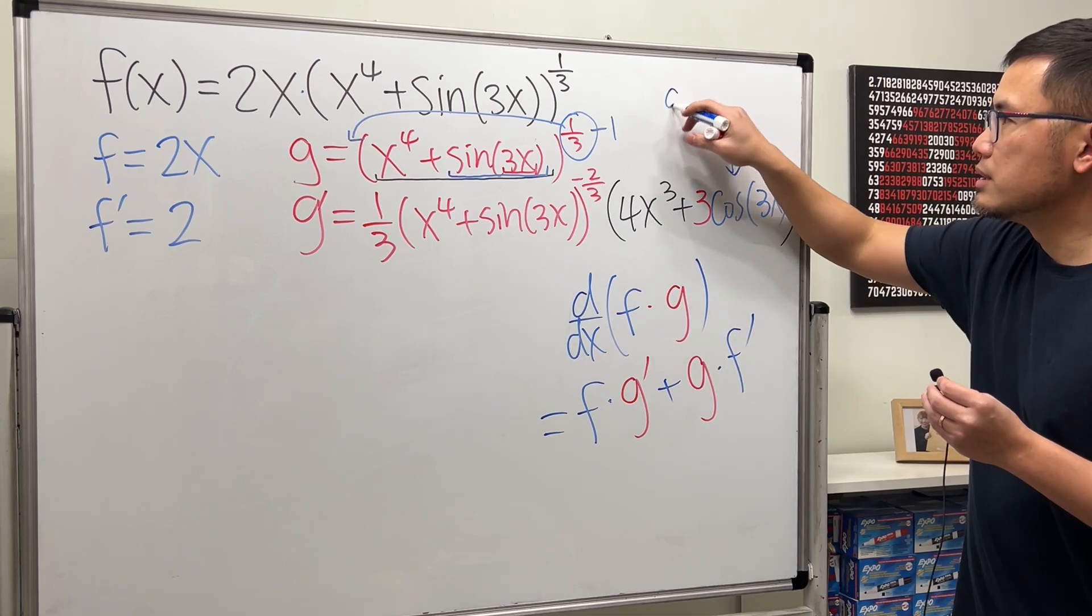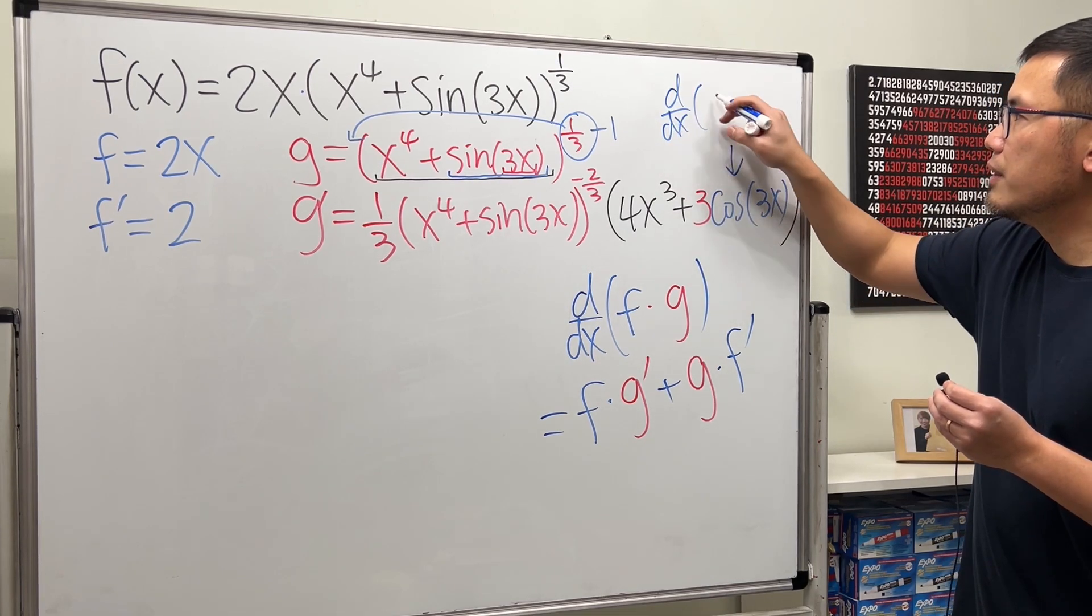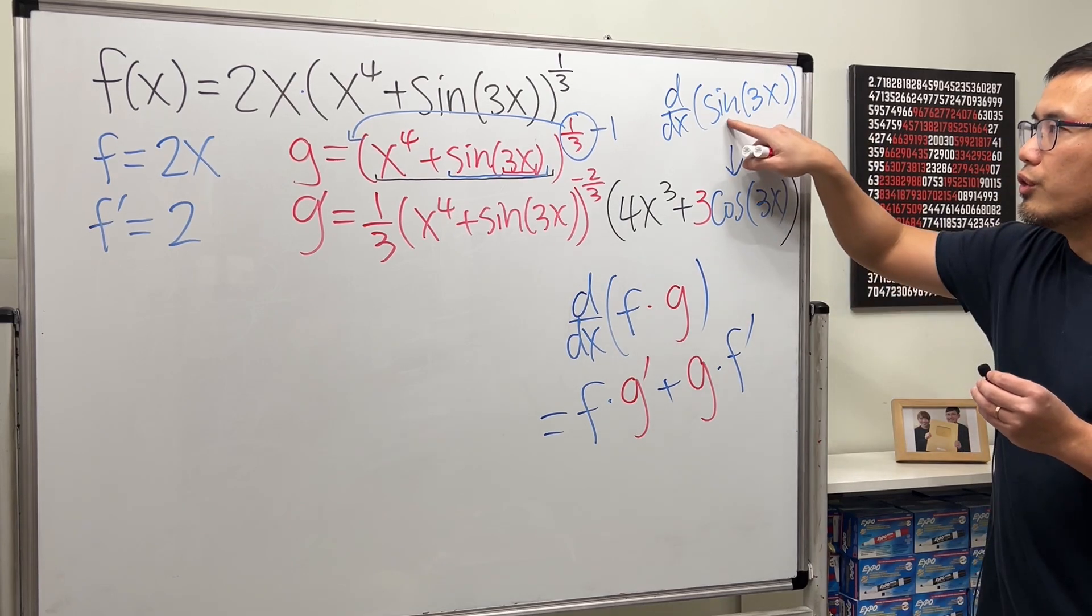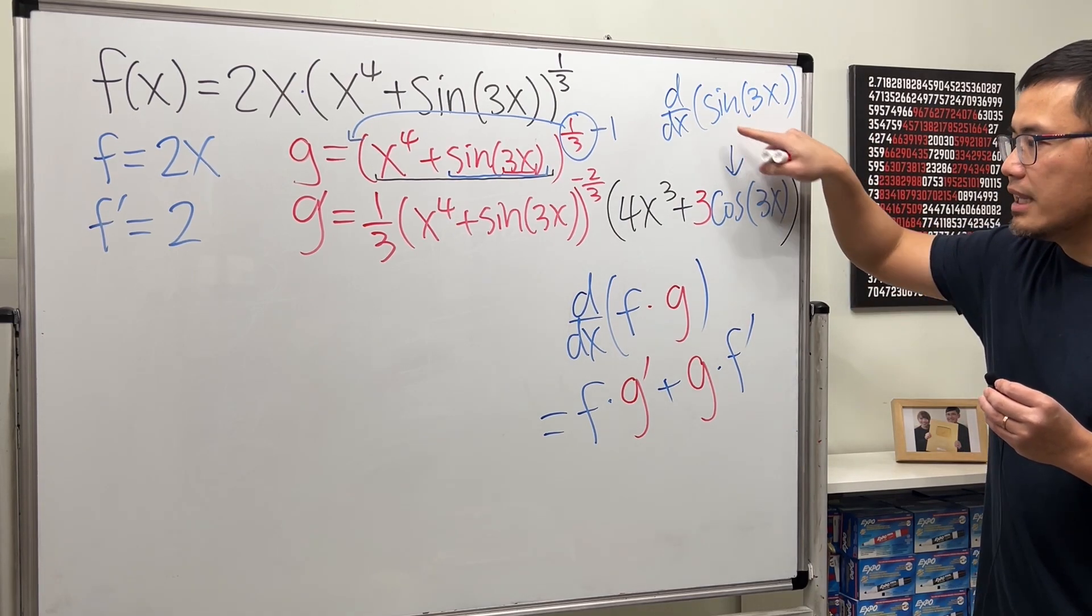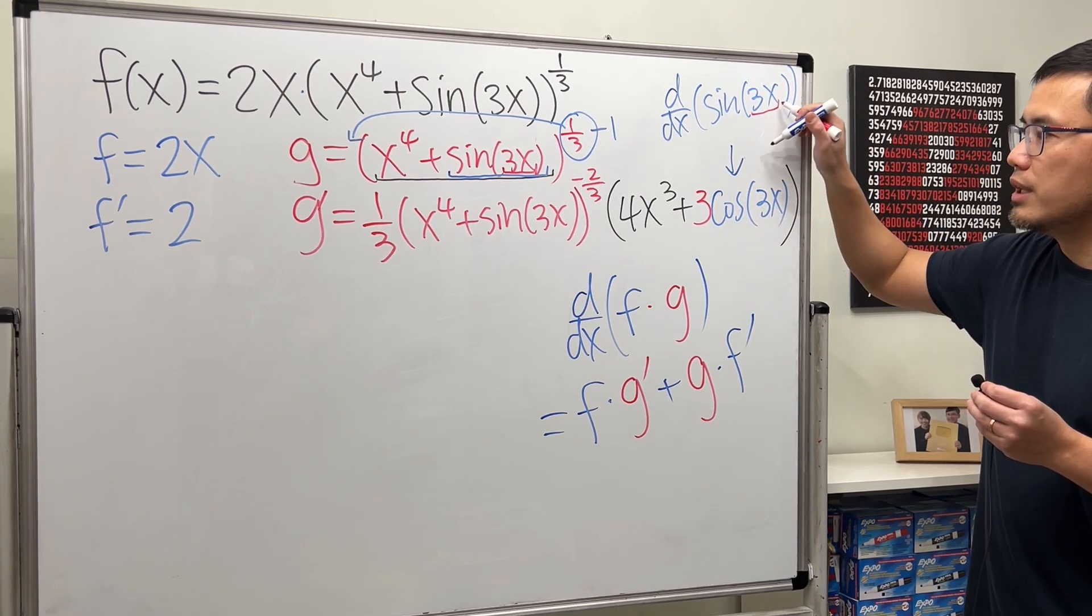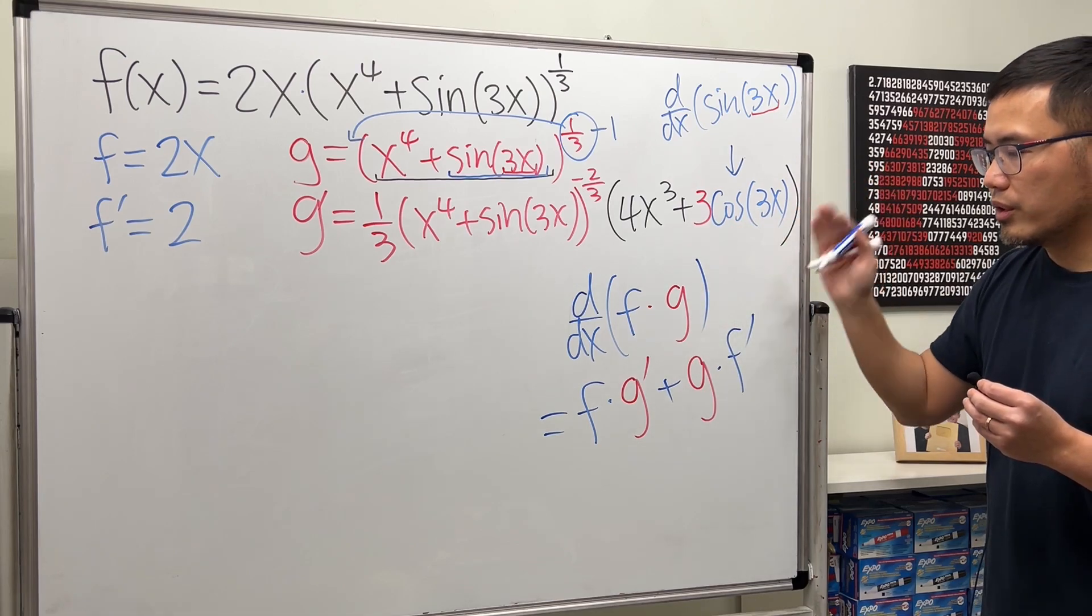Again, this little part is just the derivative of sine of 3x. You first take the derivative of sine. You get cosine. And the input stays the same. And then you multiply by the derivative of 3x, which is that 3. So that's what we have.